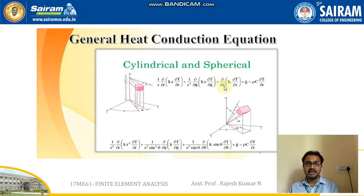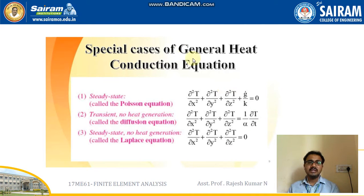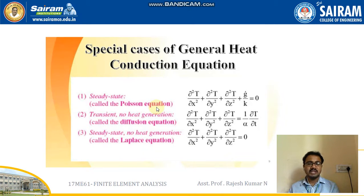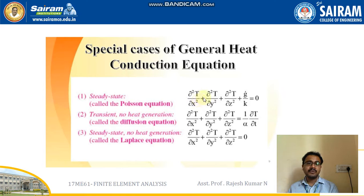These are the special cases of the general heat conduction equation: steady state, transient, and the steady state Laplace equation. For the steady state condition, which is also called Poisson's equation: ∂²T/∂x² + ∂²T/∂y² + ∂²T/∂z² + G/K = 0.